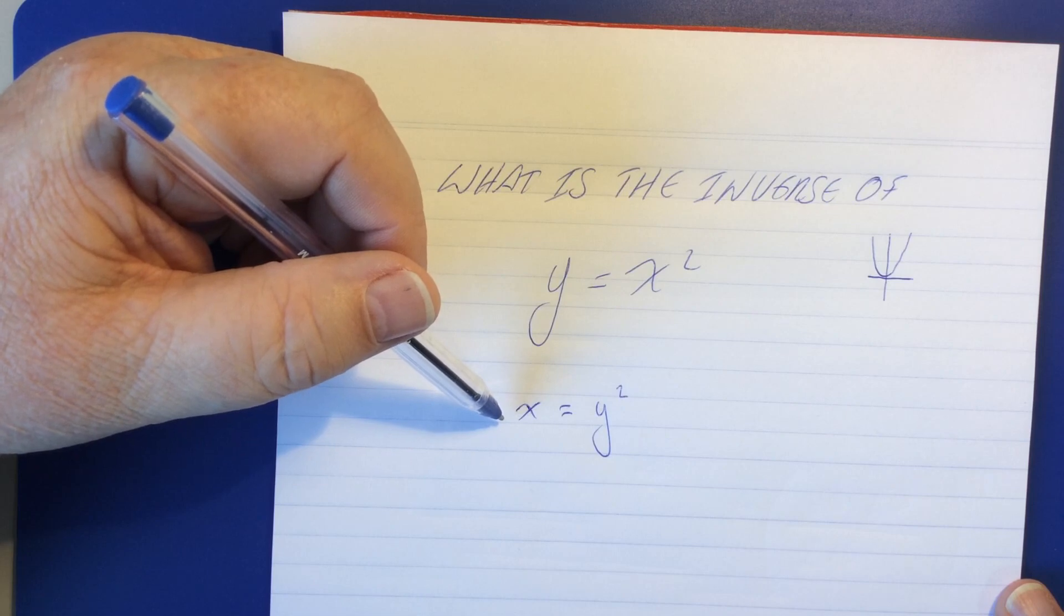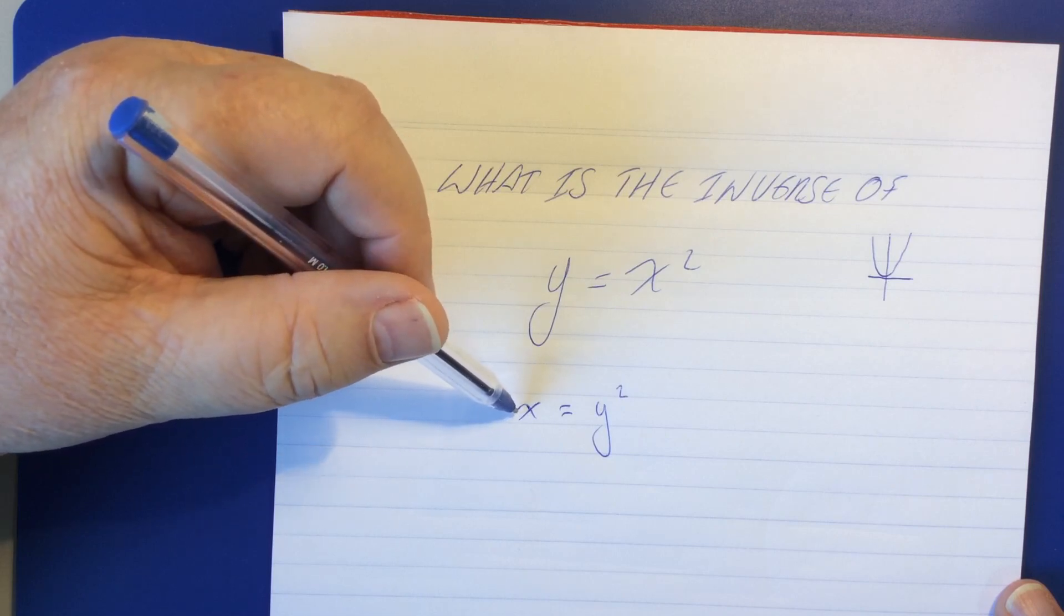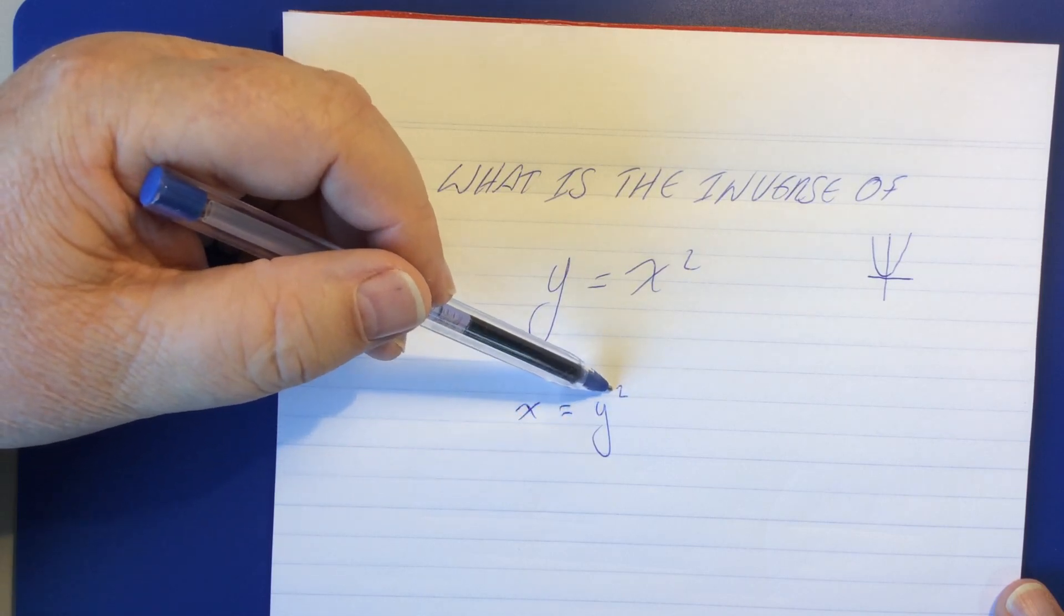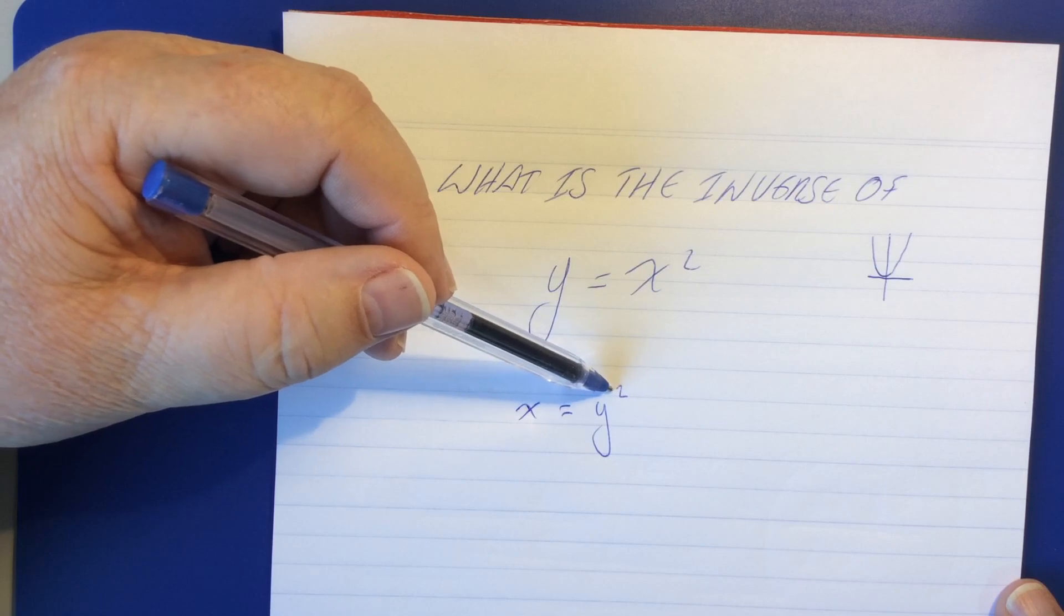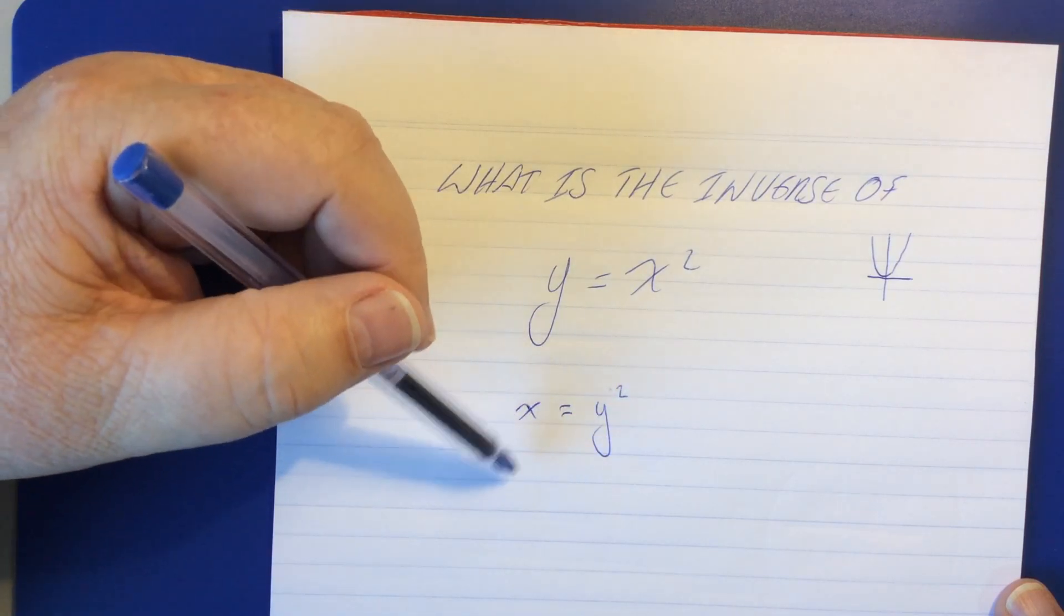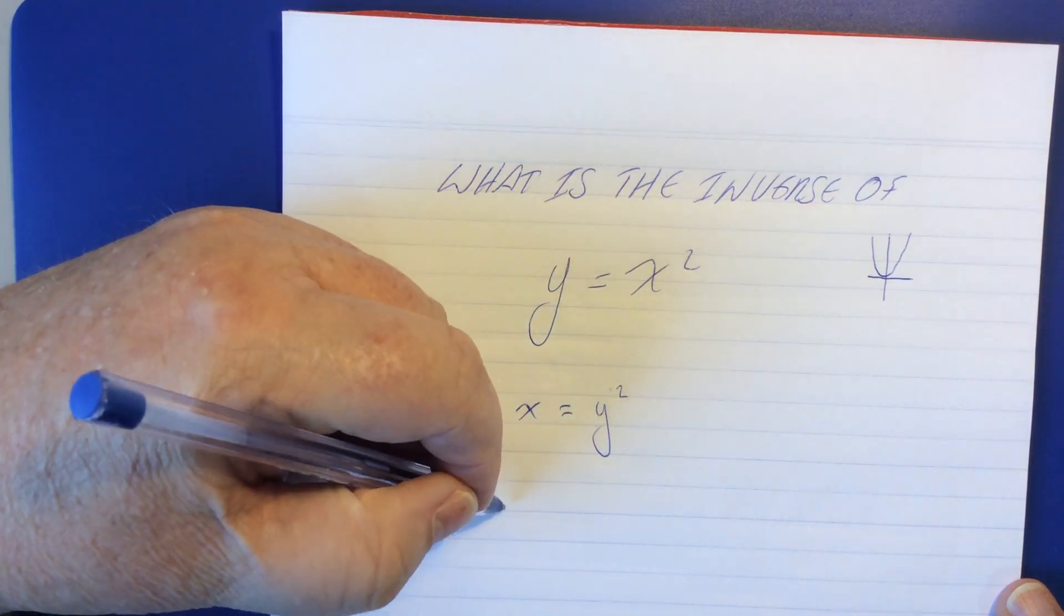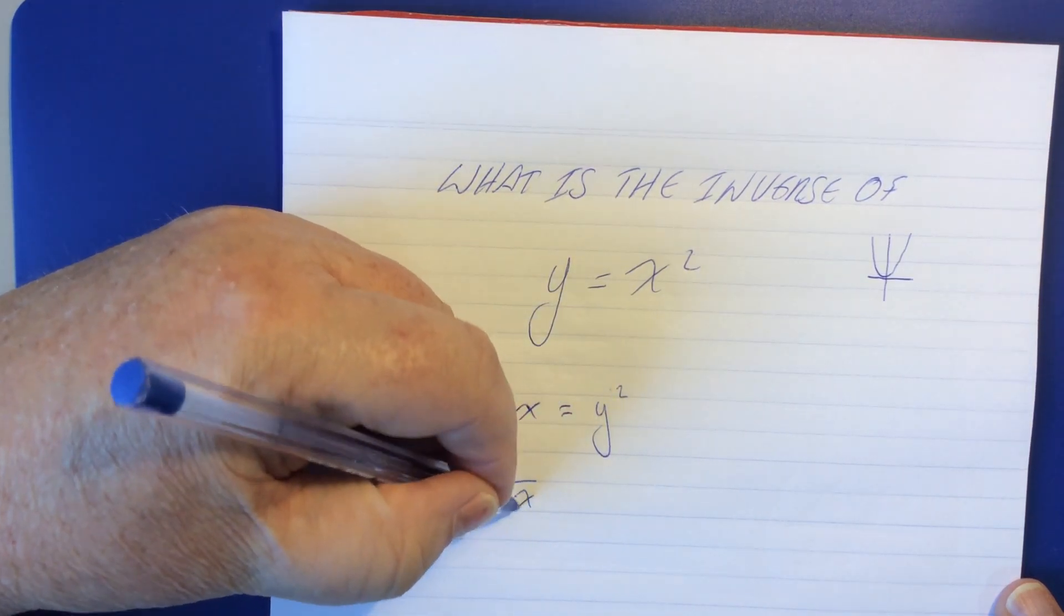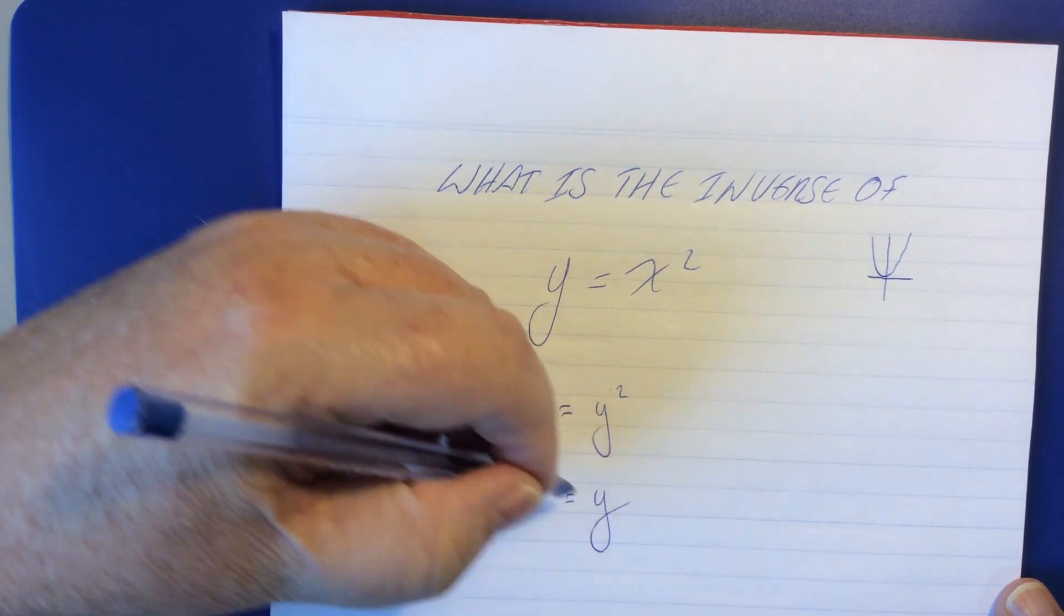This is not particularly hard. So, the question is, how do we get rid of this? How do we make y on its own equal something? Well, the answer is that we take the square root of both sides. And this is what you wind up with.